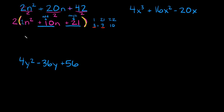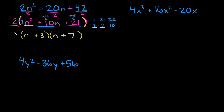So if we factor this quadratic, we're going to have our two parentheses. We have n squared, so we'll have an n here and an n here. Then what goes here? The two numbers we just found: positive 3 and positive 7 — so plus 3 and plus 7. Also don't forget the 2 that we factored out at the very beginning — just bring that straight down. So this would be your final factored answer: 2 times (n + 3) times (n + 7).